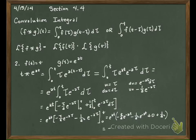So this becomes negative T over A minus one over A squared plus one over A squared E to the AT. Any questions about that integral we just did?